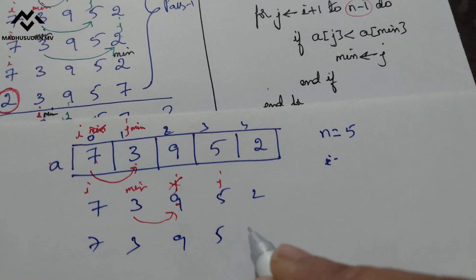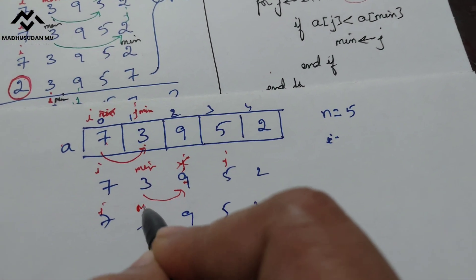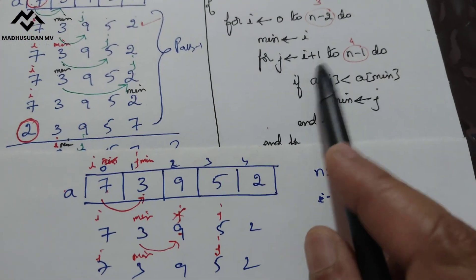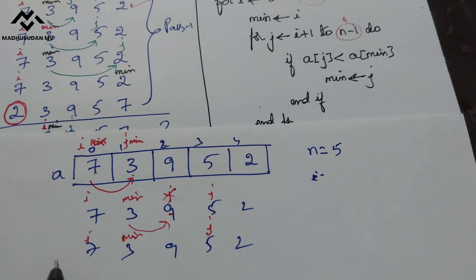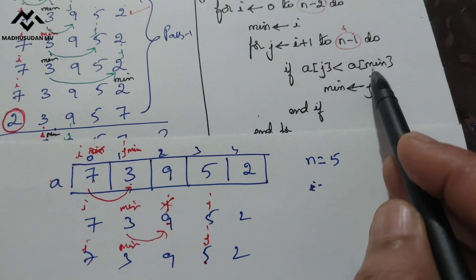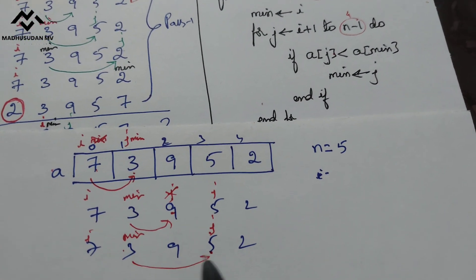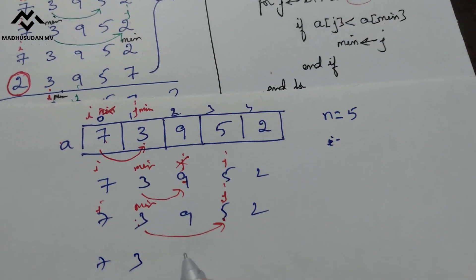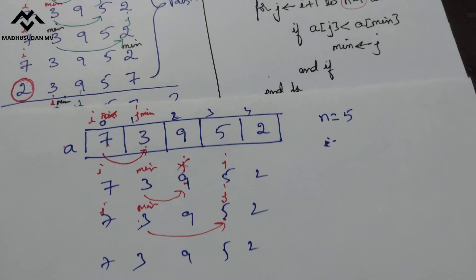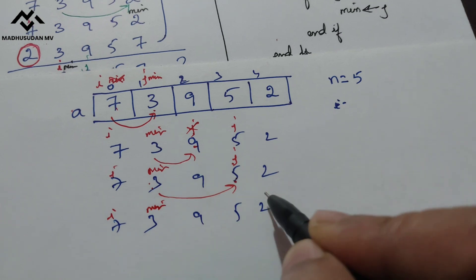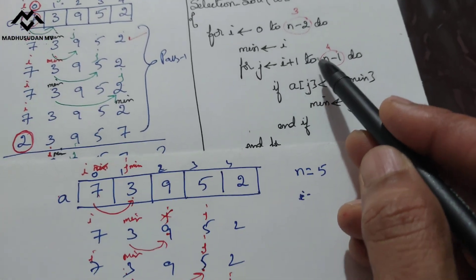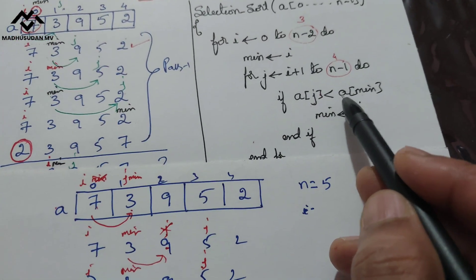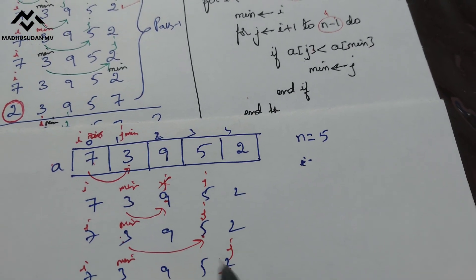Array is still 7 3 9 5 2. This is my i, this is my min. j is now at index 3. 3 is less than or equal to 4, true. a[3]=5 is less than a[min]=3 — false, so min stays. j increments to 4. 4 is less than or equal to 4, true. a[j]=2 — 2 is less than a[min]=3, true.